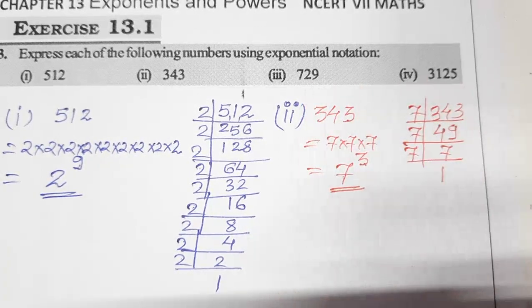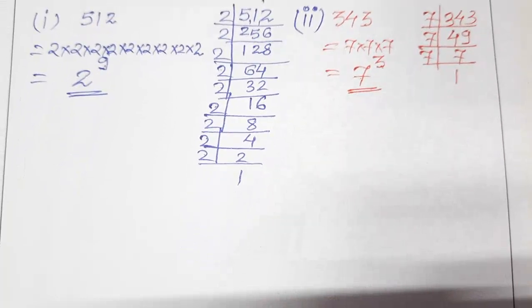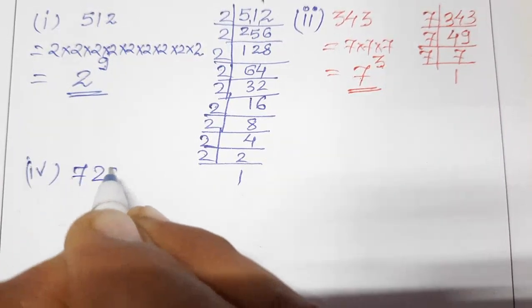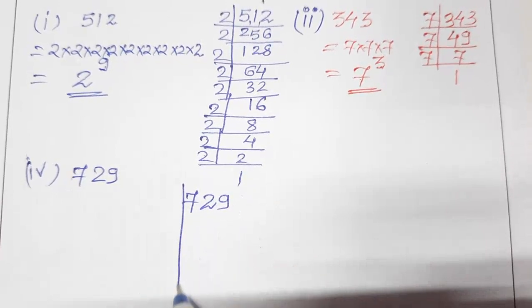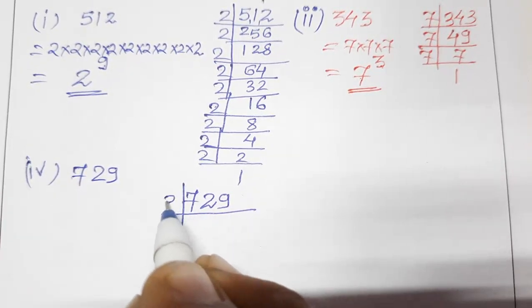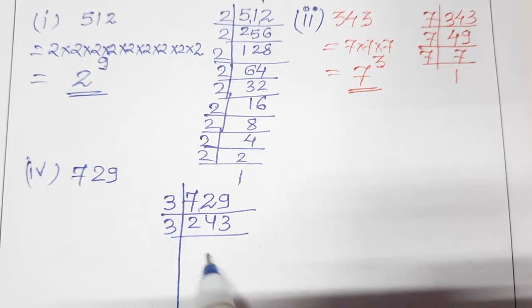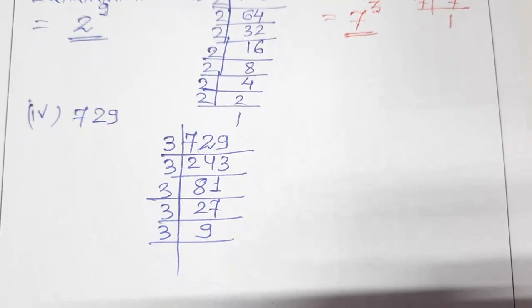Next one is 729. Let's do the 4th one. So again we will take the prime factors of 729. It is divisible by 3. 3 goes into 729 to give 243, then 81, then 27, then 9, then 3, and finally 1.